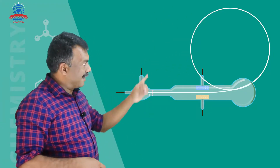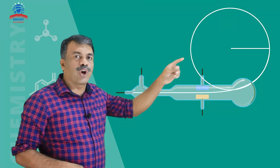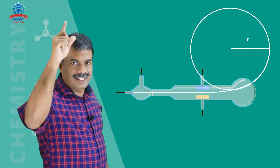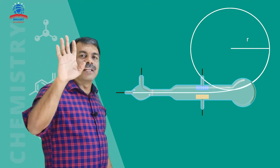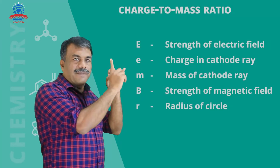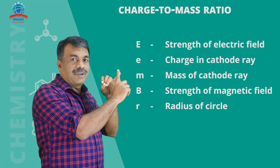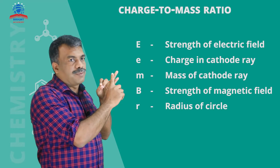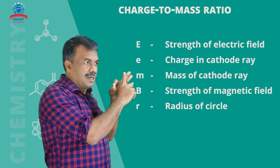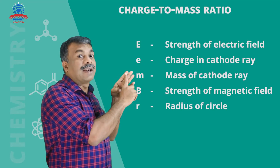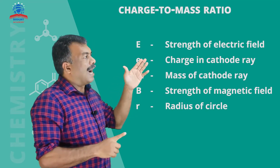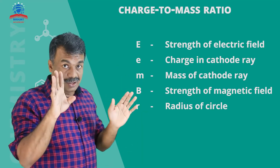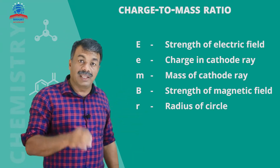There are 5 quantities involved in this experiment. The first is the electric field strength E. The second is the charge. The third is the mass M. The fourth is the magnetic field strength B. And the fifth is the radius R of the circular path.